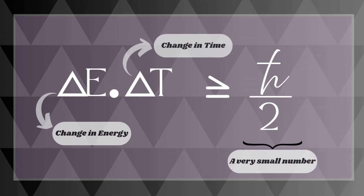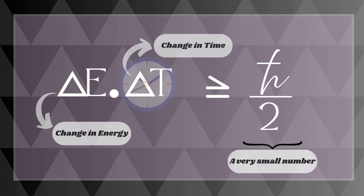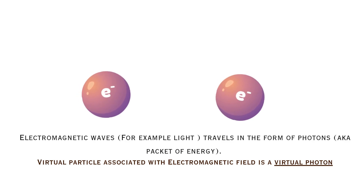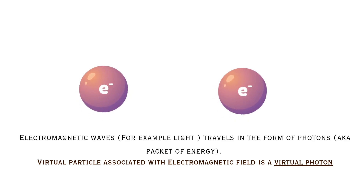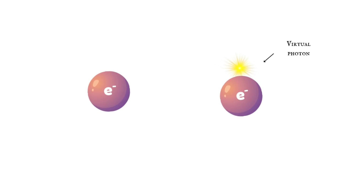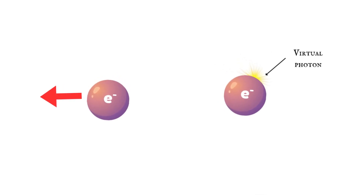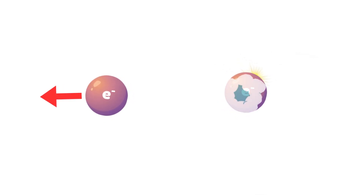Their existence is actually limited by the Heisenberg uncertainty principle. Borrowing energy from nature is extremely hard — nature does not like it. The more energy you borrow from nature, the less time you are allowed to keep it. Here's how this explains our initial question: the electron that ejects the virtual photon recoils.